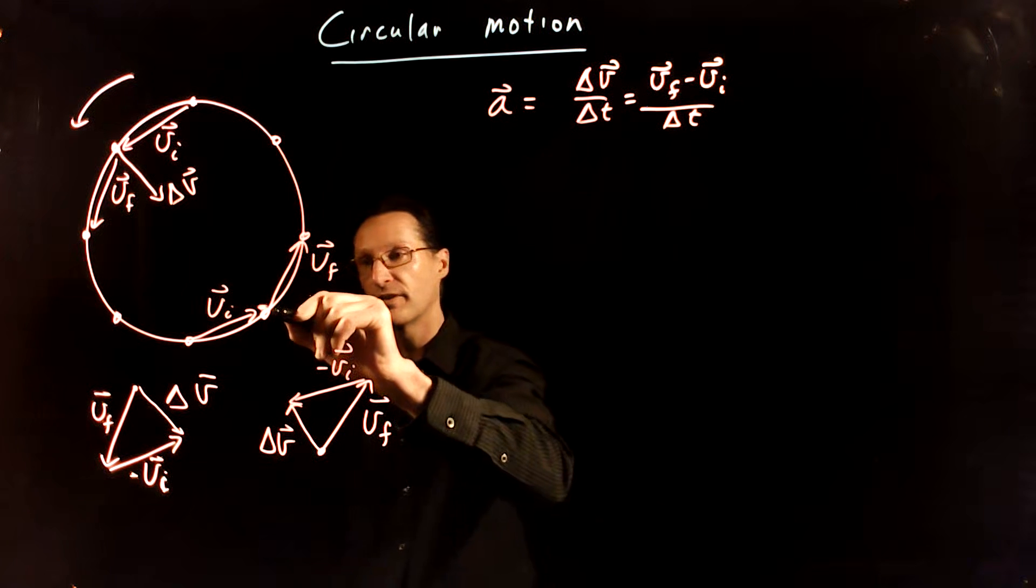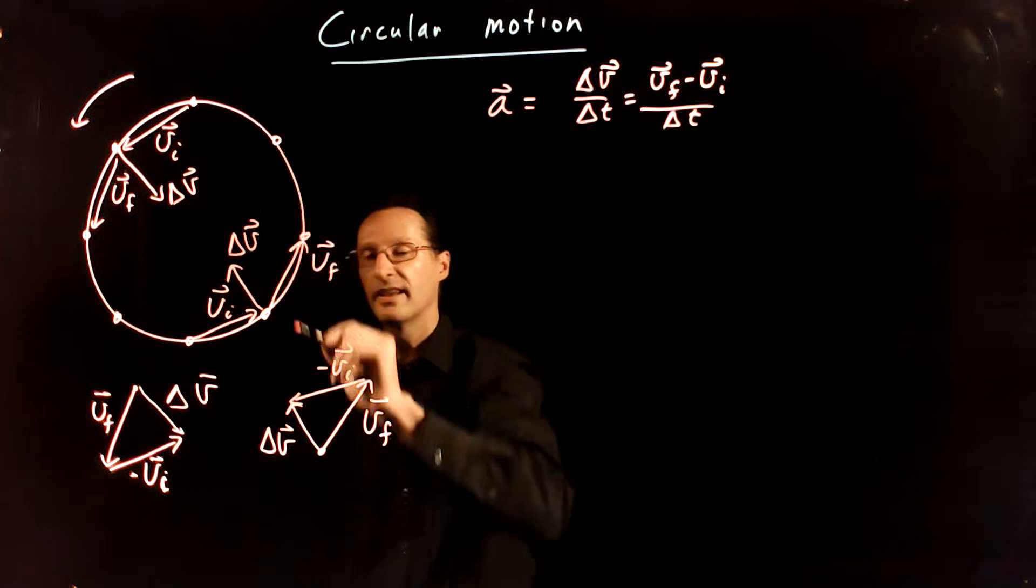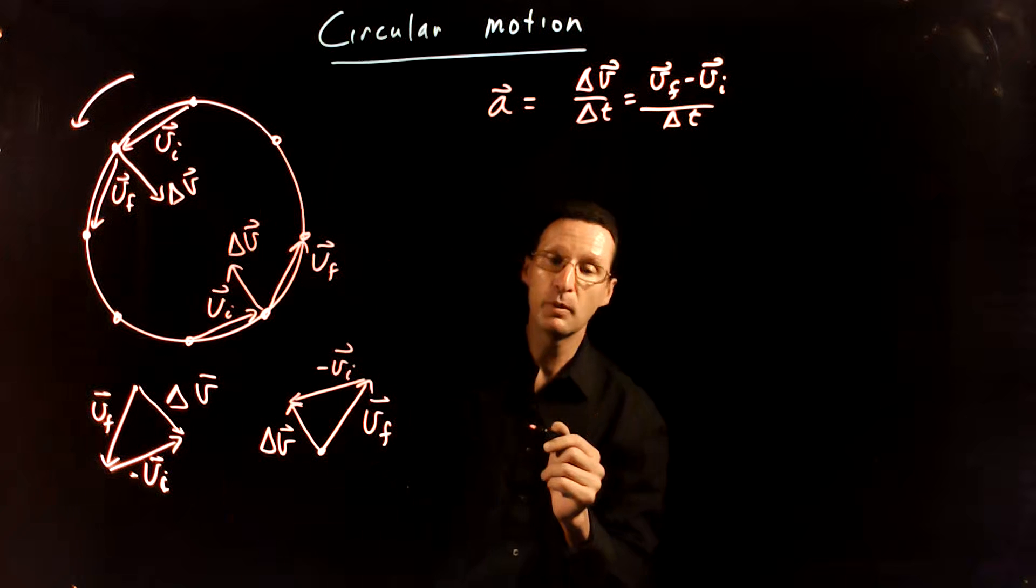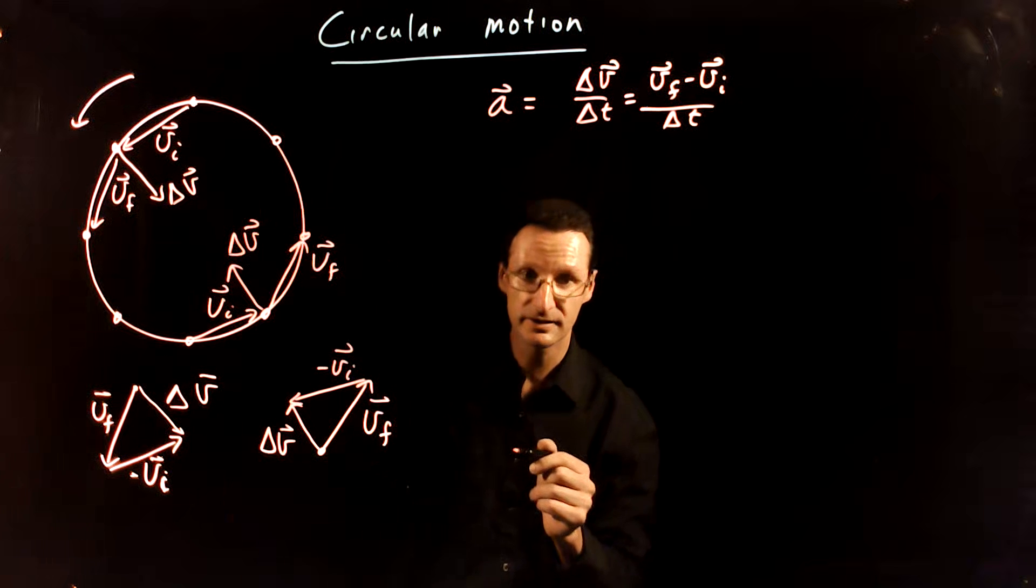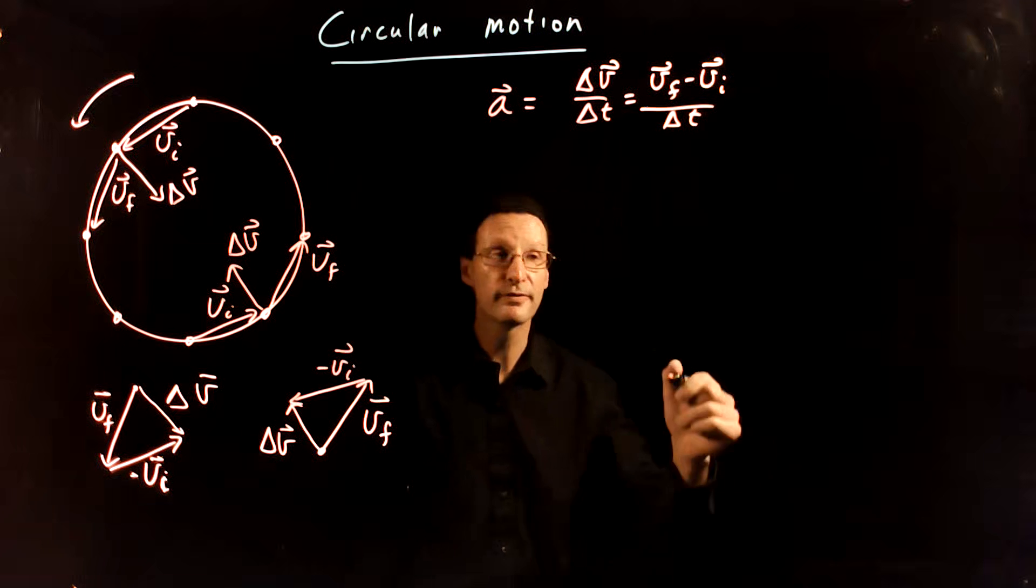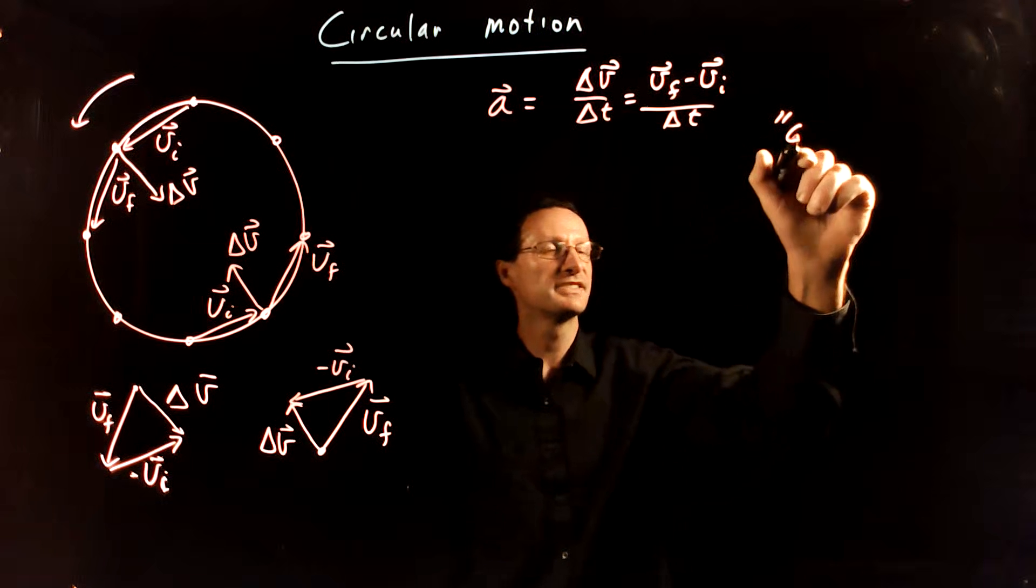And so for this point here, that delta v is going to point that way. You notice both of these point towards the center of the circle. We even have a word for this. It's a fancy word. You can use it to impress your friends here.